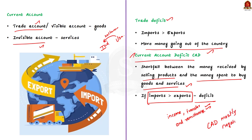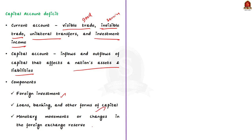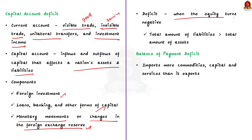Moving on to capital account deficit. The current account consists of visibles trade — export and import of goods — and invisible trade — export and import of services — along with unilateral transfers and investment income. The capital account is a record of inflows and outflows of capital that directly affect the nation's foreign assets and liabilities. Its components include foreign investment and loans, banking and other forms of capital, and changes in foreign exchange reserves. A capital account deficit occurs when equity turns negative — meaning total liabilities exceed total assets. Note that NRI deposits in an NRI account come under the capital account, whereas someone sending money via remittance comes under the current account.